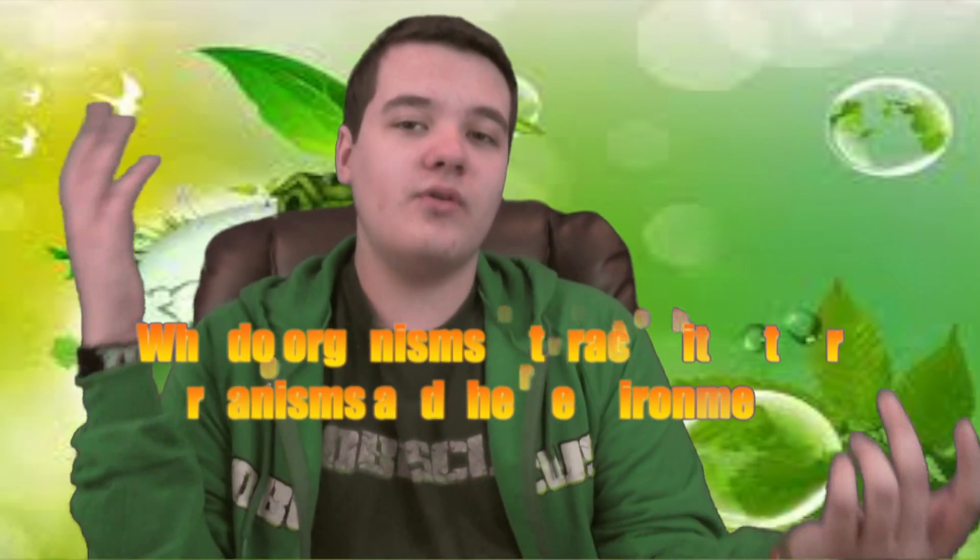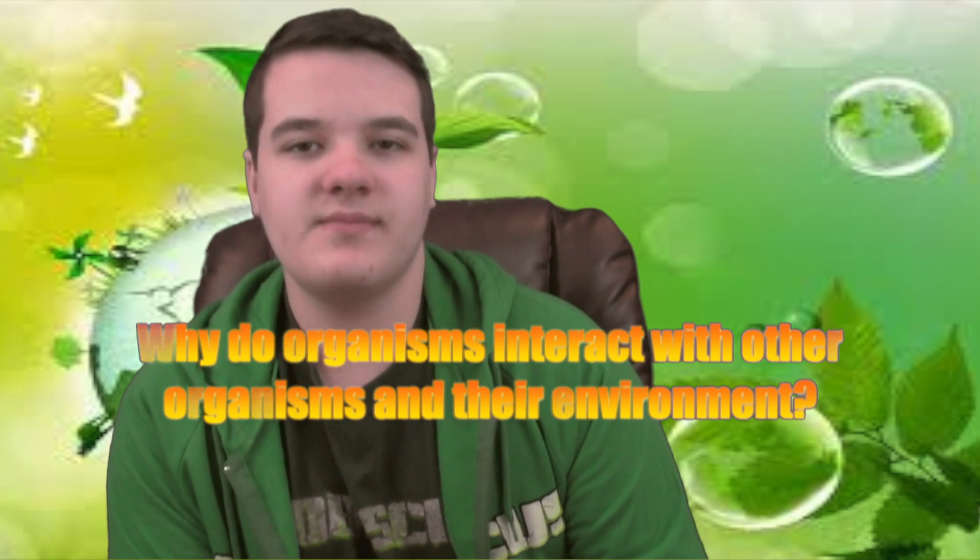So why do organisms interact with organisms and their environment? First of all, all living things have eight things in common: all living things are made up of cells, reproduce, have a universal genetic code, grow and develop, obtain materials and energy, respond to their environment, maintain homeostasis, and evolve. So most organisms do things in order to survive and live.